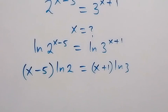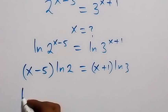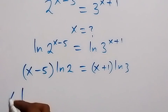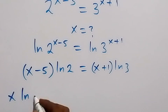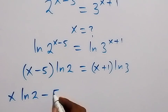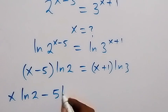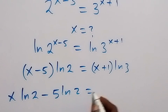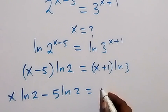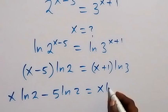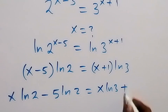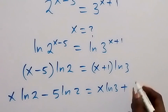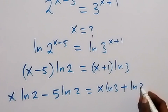Then ln 2 will open this bracket, so this gives us x ln 2 minus 5 ln 2 equals to ln 3 opens this bracket, giving x ln 3 plus 1 times ln 3, that's ln 3.